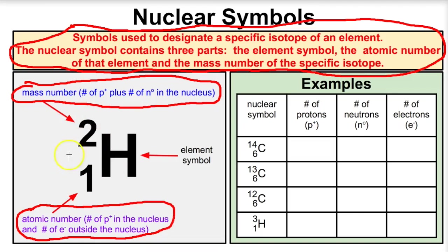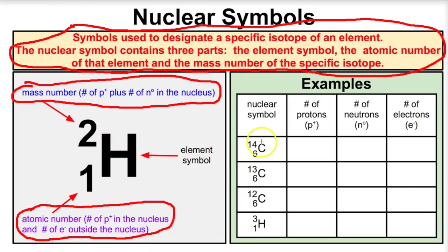So if we have a nuclear symbol like this, we can quite easily figure out the number of protons, the number of electrons, and the number of neutrons in that isotope. Let's take a look at a few examples. Here we have a nuclear symbol for carbon, or a specific isotope of carbon.